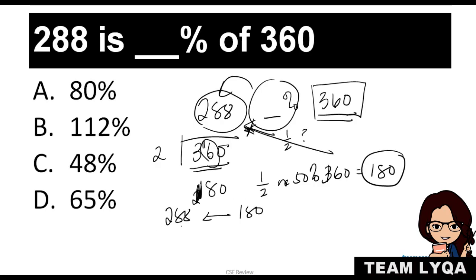So, kung magsisimula ka sa 360, ang unang tanong is, ang 288 ba ay kalahati? Aabot ba sya sa kalahati ng 360? So, when I do that, ang gagawin mo lang would be to divide this number by 2, which is something that's very easy to do kasi left to right lang yan. So, we have 180. So, ibig sabihin, ang 1 half or 50 percent ng 360 is 180. Pero, 288 sya. So, ang 288 ay malayo pa yan sa 180.